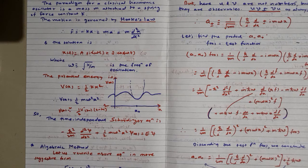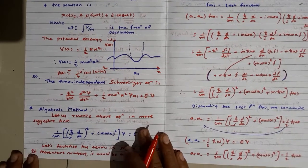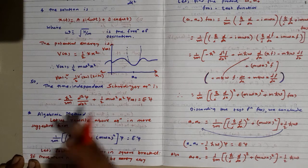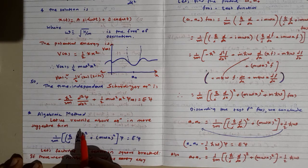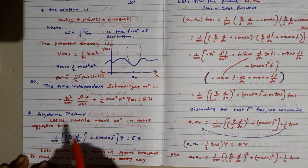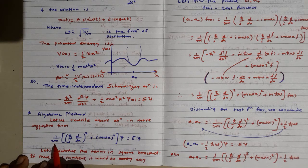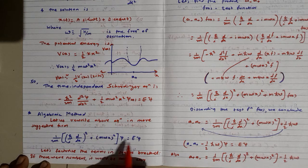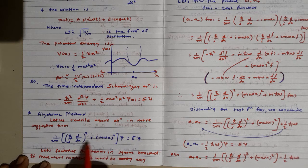There are various methods to solve this equation for the simple harmonic oscillator, but we will use the algebraic method. We rewrite the equation in a more suggestive form by factoring out 1/2m: (1/2m)[(ℏ/i · d/dx)² + (mωx)²]ψ = Eψ. We want to factorize the term in the square bracket.